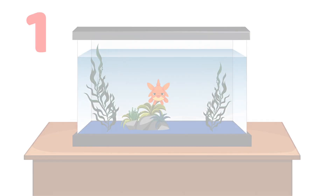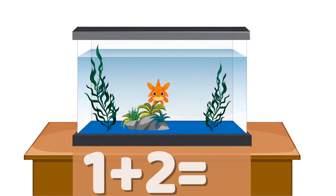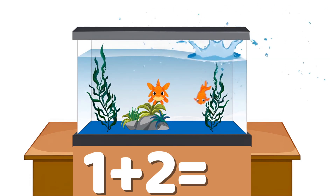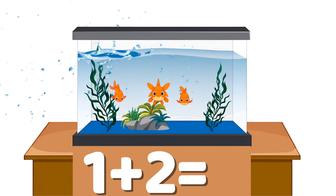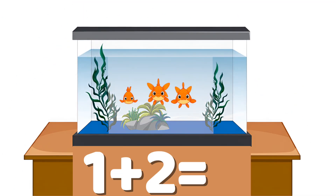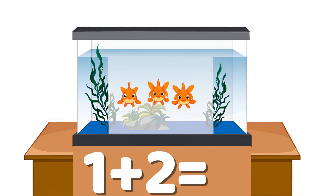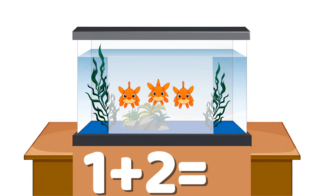Example number one: one plus two. One fish is already in the tank. Now two more fish swim into the tank. Let's count them all: one, two, three. One plus two equals three.